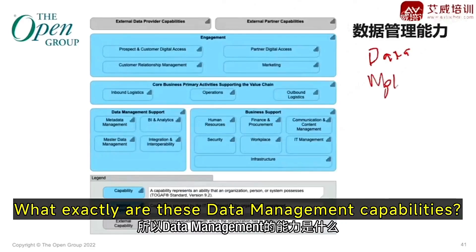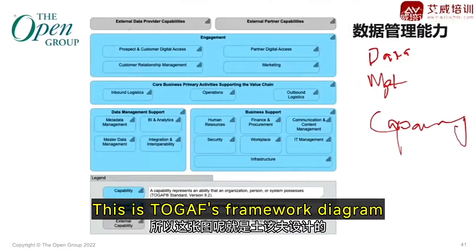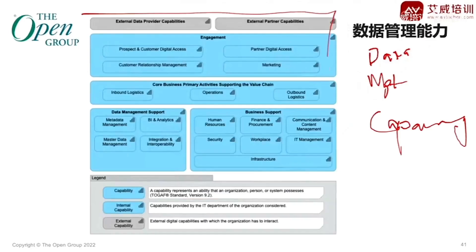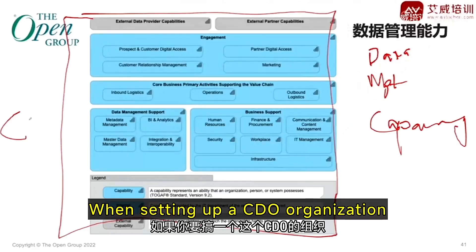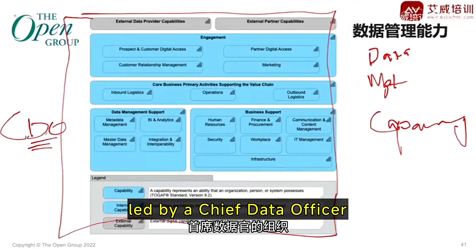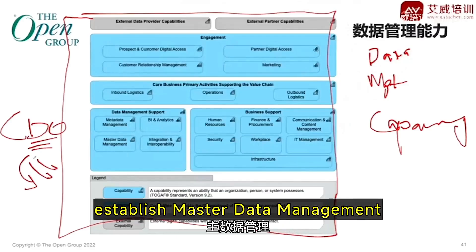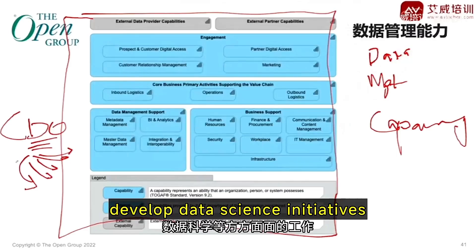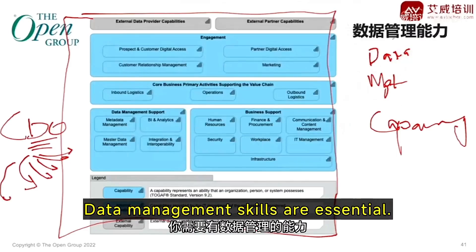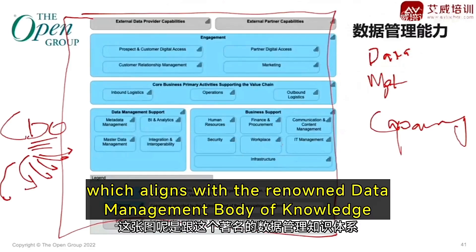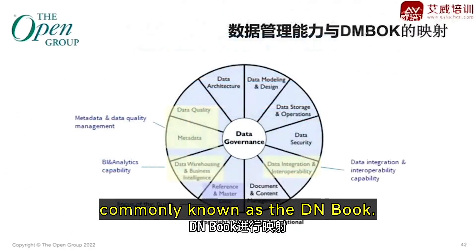What exactly are these data management capabilities? This is TOGAF's framework diagram — a capability model for data management. When setting up a CDO organization, led by a Chief Data Officer, you'll need to implement data governance, ensure data protection, establish master data management, develop data science initiatives, and deliver data services. Data management skills are essential, as shown in this diagram, which aligns with the renowned Data Management Body of Knowledge, commonly known as the DMBOK.